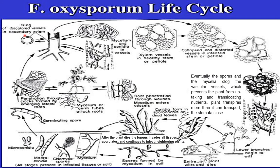This is the life cycle of Fusarium oxysporum. First, the mycelium produces any of the three types of asexual spores: chlamydospores, macroconidia, or microconidia. Microconidia and macroconidia are produced under favorable conditions, whereas chlamydospores are produced under unfavorable conditions. Later, any of these spores will start germinating.